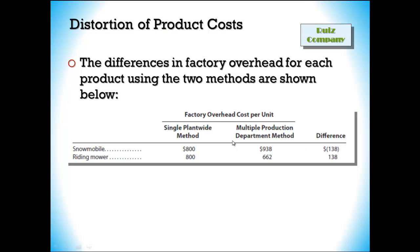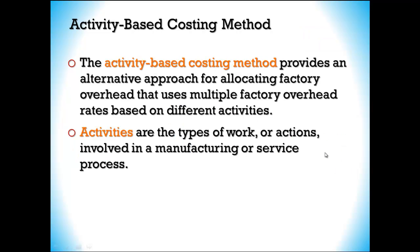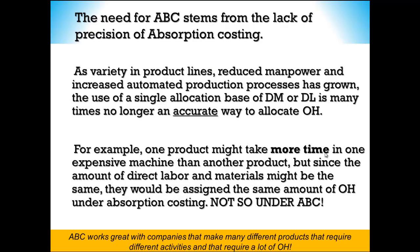We can see the distortion in product cost: we had $800 for each product, but using multiple departments we get a $138 difference. Activity-based costing is the most precise of the three methods. It uses multiple factory overhead rates based on different activities — the types of work or actions involved in a manufacturing or service process. Its purpose is to understand which activities require us to consume the resources that cost us money.